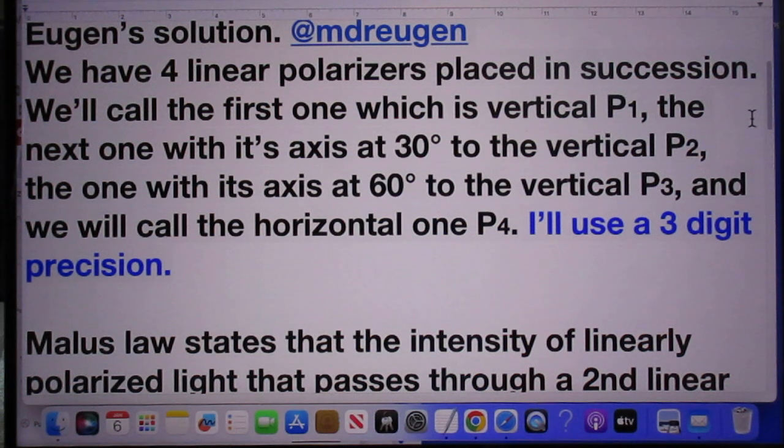I want to remind you now, because this comes up later, that every time you go to the next polarimeter, the angle changes by 30 degrees—from zero to 30 degrees, from 30 to 60 degrees, from 60 to 90 degrees.